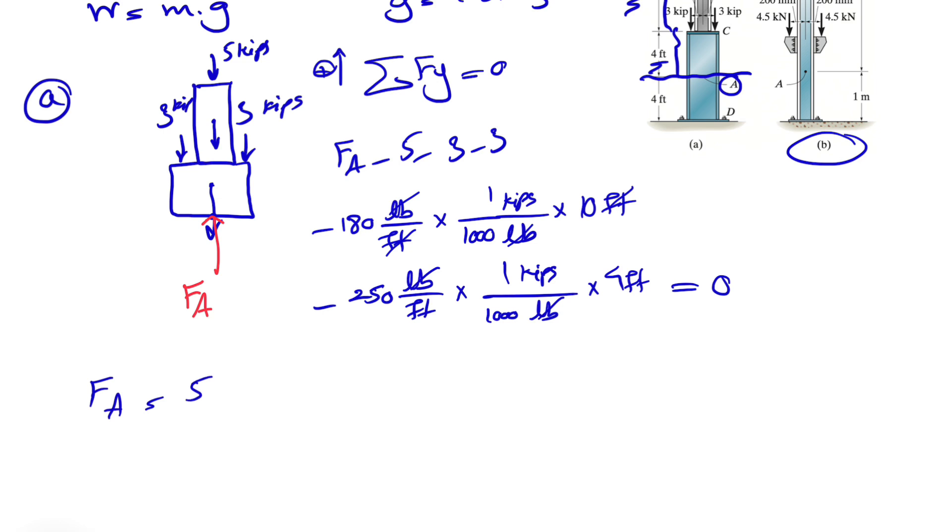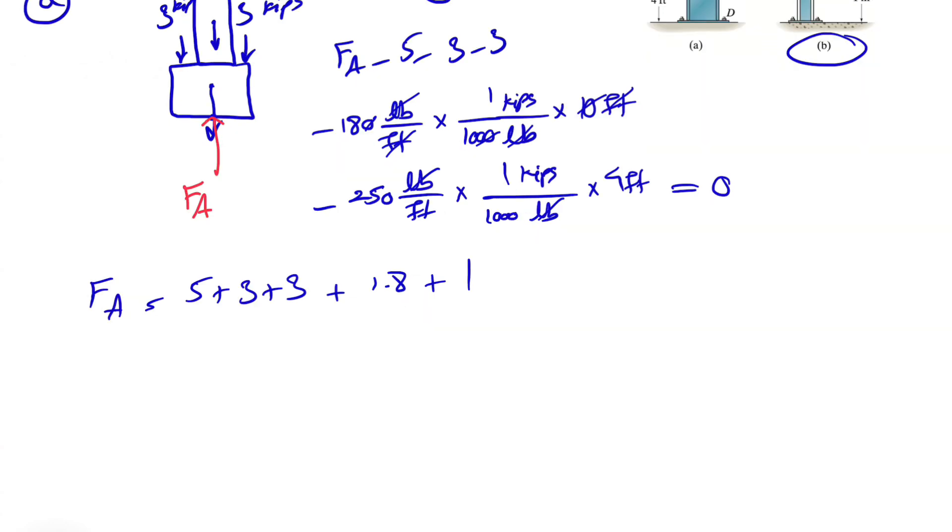And this is going to equal zero. Our FA would be five plus three plus three plus we can cancel out these ones, we get 1.8 plus 250 times four is 1000, so we'll get one. If we calculate this, we have basically 11 plus 2.8, which is 13.8 kips.